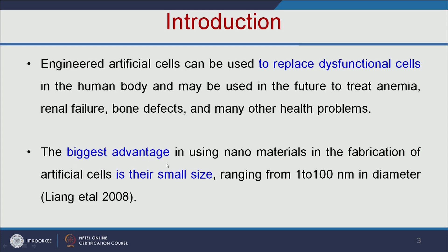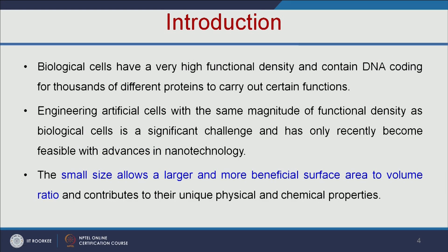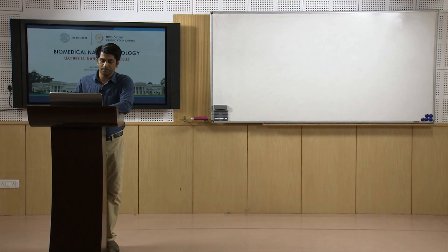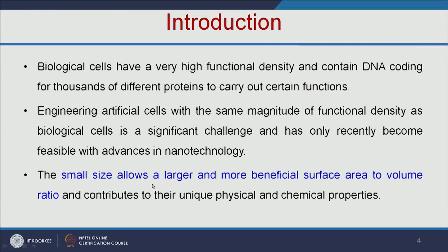The biggest advantage in using nanomaterials in the fabrication of artificial cells is their small size. Biological cells have very high functional density and contain DNA coding for thousands of different proteins to carry out certain functions. Engineering artificial cells with similar function is a significant challenge. With the help of nanotechnology, we could be able to achieve those challenges. The small size allows a larger and more beneficial surface area to volume ratio, which makes nanomaterials more beneficial for constructing artificial cells.